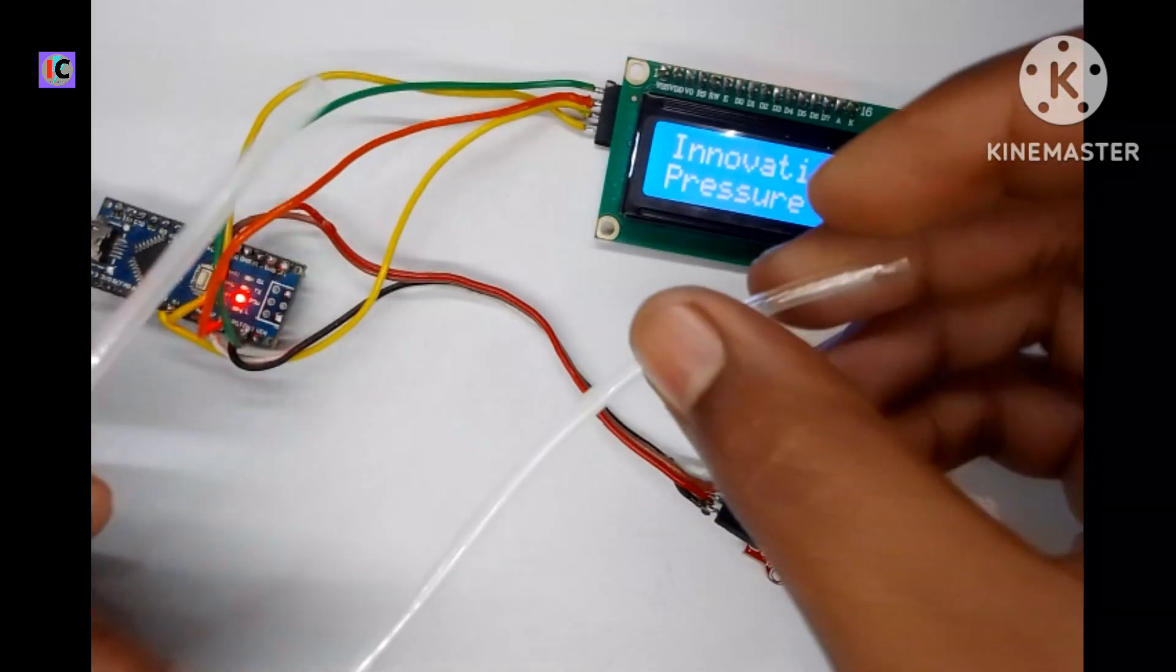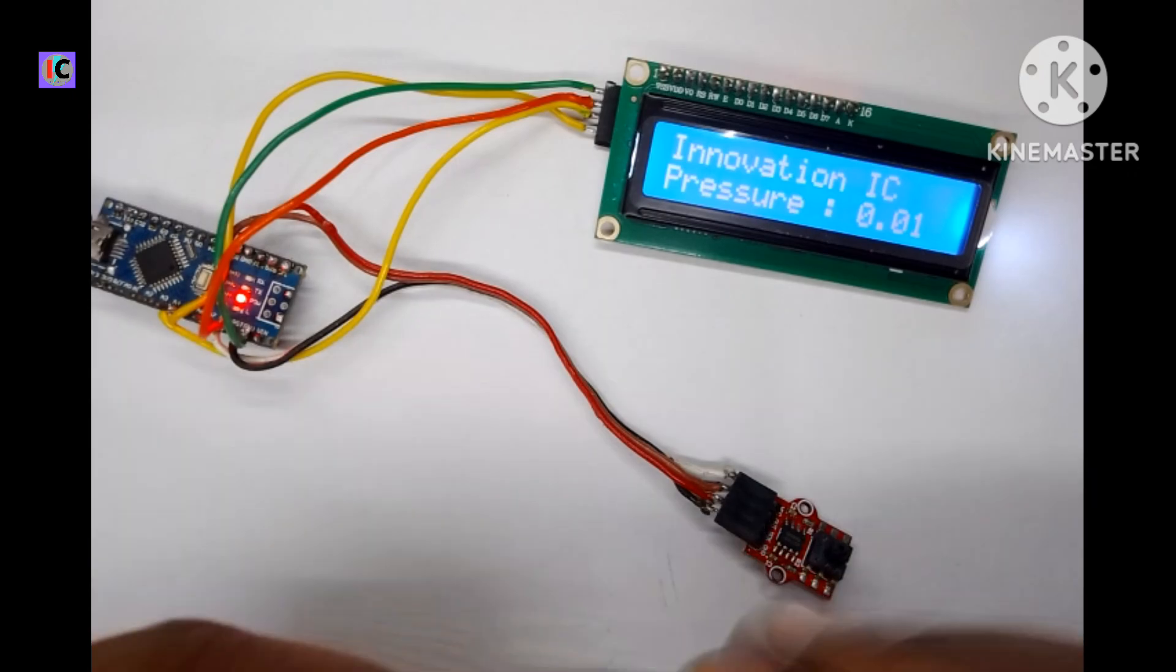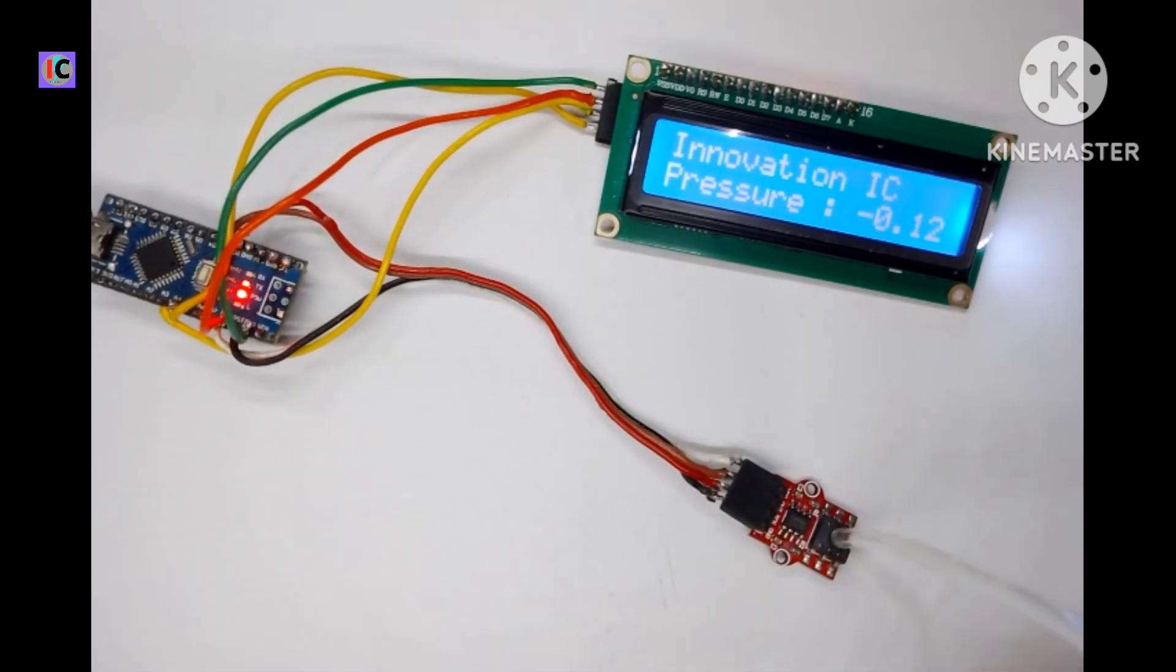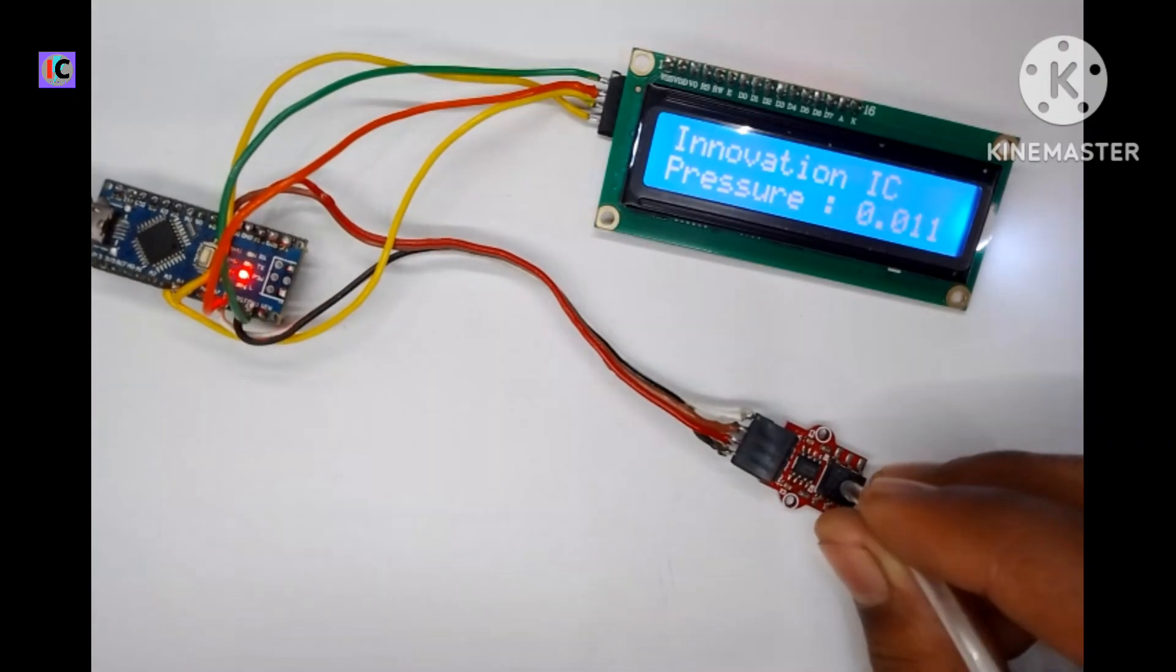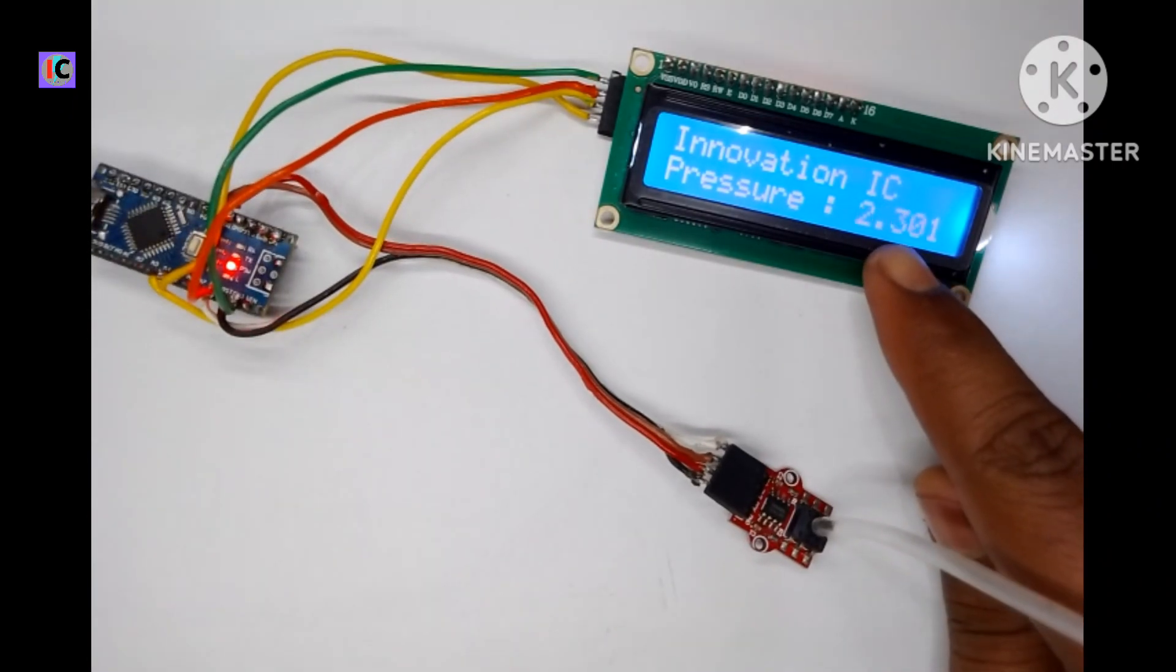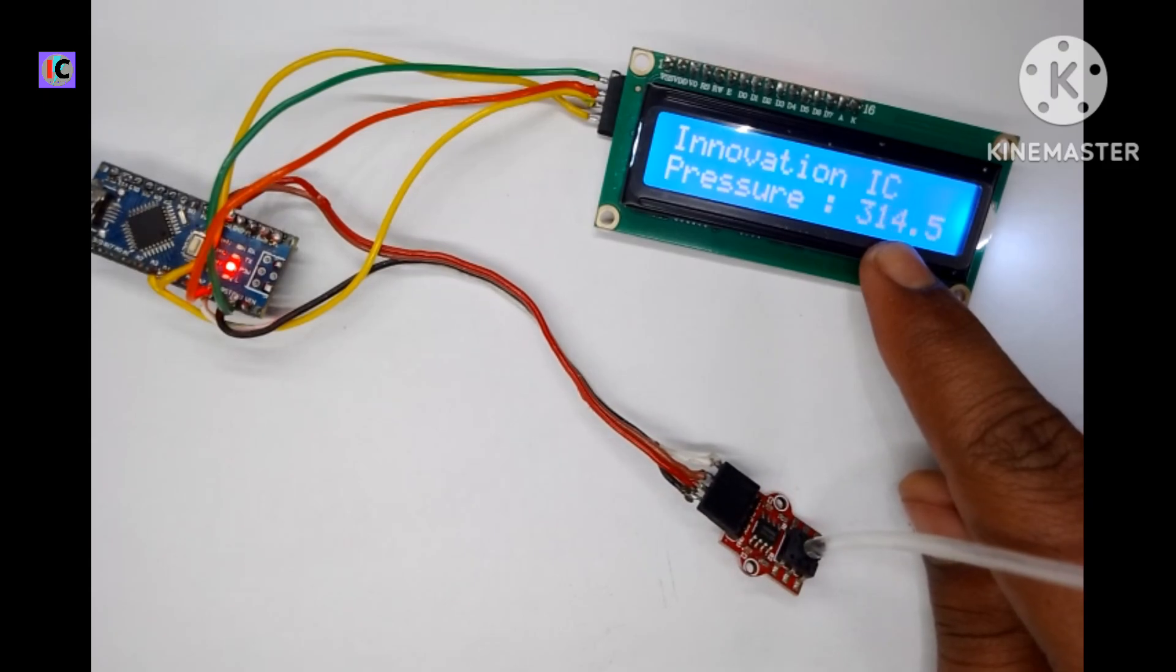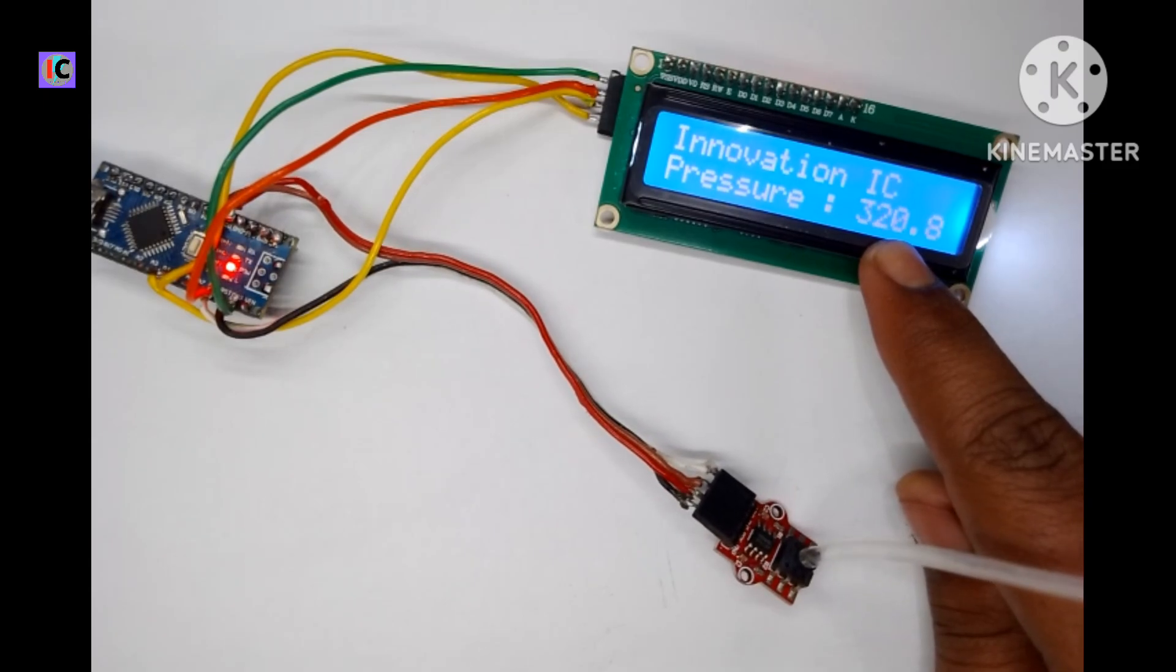Now you can see I'm connecting a small pipe for testing with my syringe. I have connected the pipe with my syringe and applying pressure to see the value on the display.